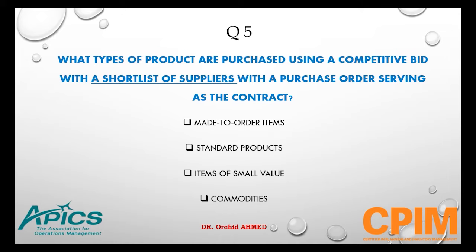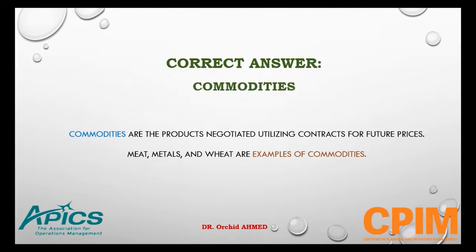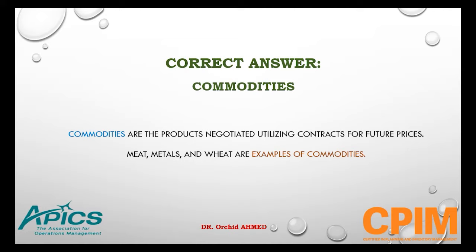The right answer is commodities. Commodities are products negotiated utilizing contracts for future prices. Examples include meat, metals, and wheat.